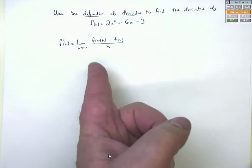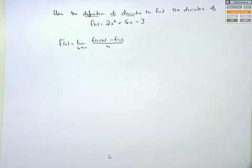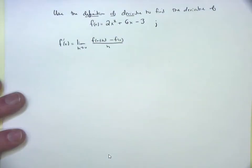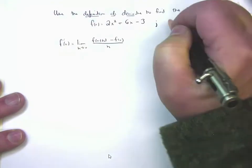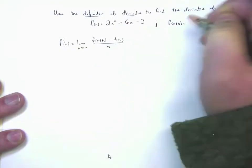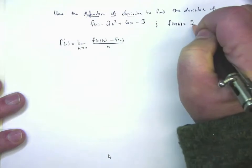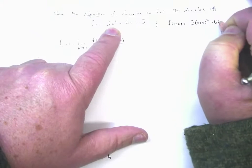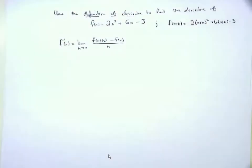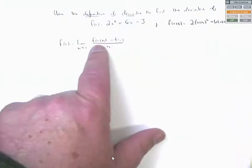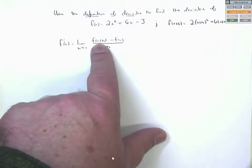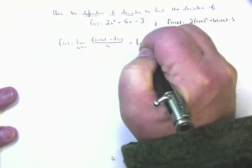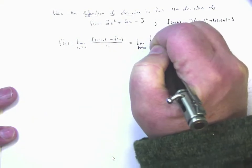But if you do that on a test question worth 10 points that says 'use the definition of derivative,' I'll take off 15 points — you can actually earn a negative score for not following directions. The definition of derivative must be memorized; I will not give it to you. So f(x) = 2x² + 6x − 3, and f(x+h) = 2(x+h)² + 6(x+h) − 3.